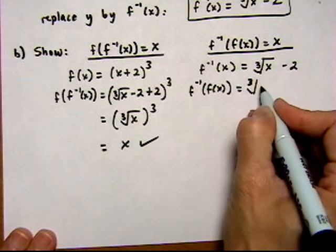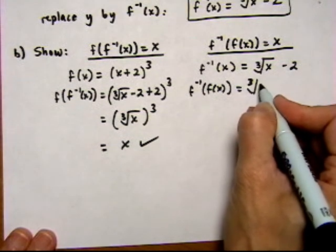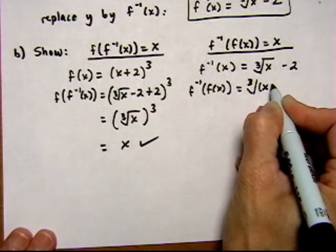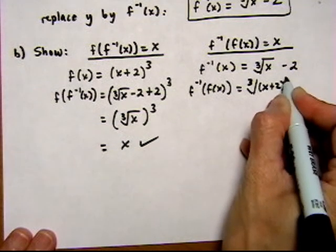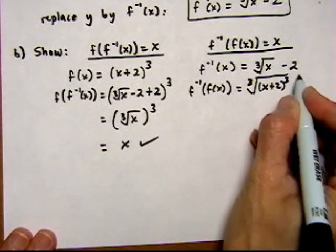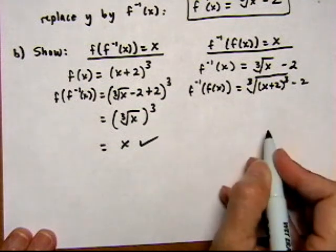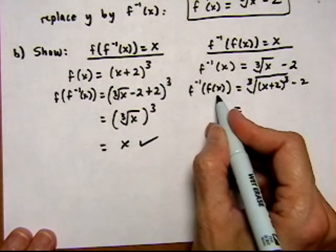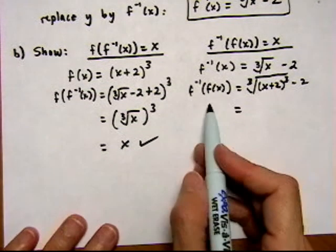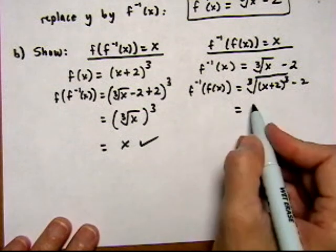We'll get cube root of, and instead of x, we have the entire f(x), which is x plus 2 cubed. And then bring down the minus 2. So if f(x) is the input, we expect to get x out if we did this correctly.